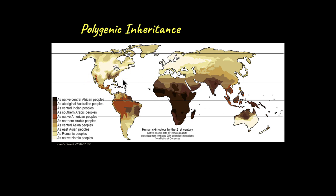Such continuous variation of phenotypes is often controlled by more than one gene. That is why the inheritance of these traits is termed polygenic inheritance.